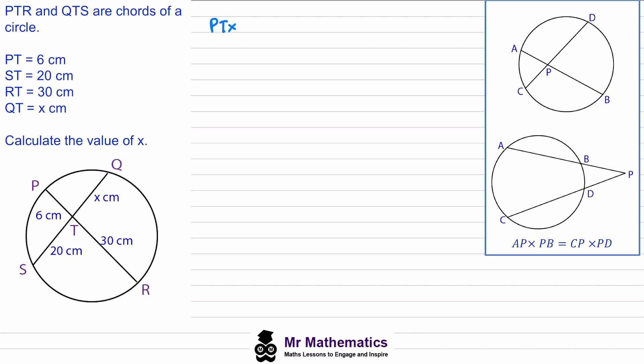...which is this length, so TR, will be equal to CP, this length which is 20 or ST, multiplied by PD which is this length x.